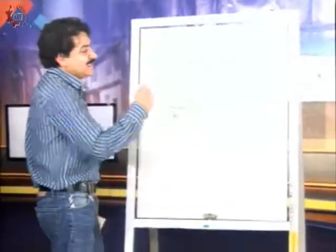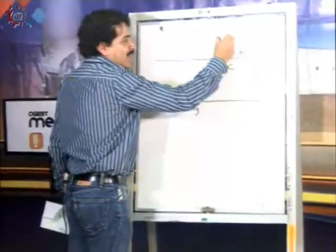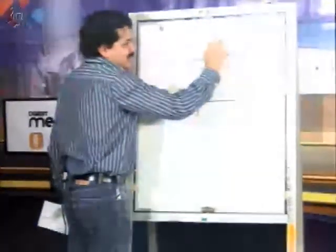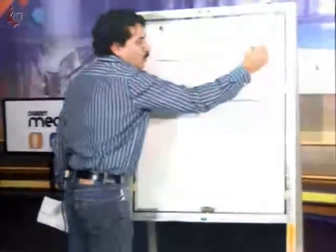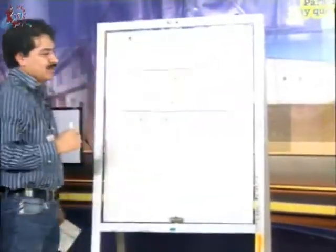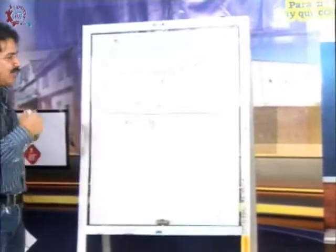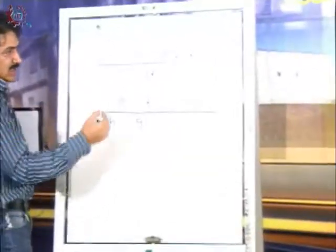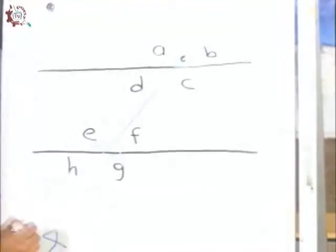Vamos a pasar al B. Si el ángulo B son 40 grados, nosotros podemos determinar la medida de los siguientes ángulos.